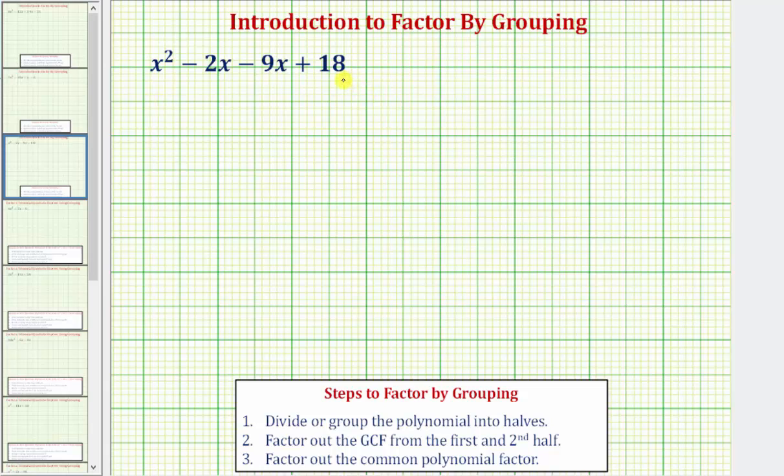Also notice how we have an even number of terms, which is required to apply the technique of factor by grouping. So even though these two middle terms are like terms, we do want to leave it in this form in order to apply factor by grouping.